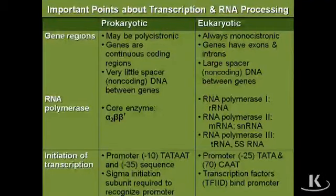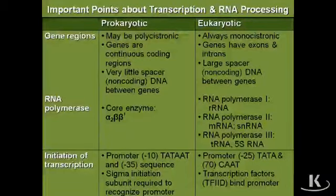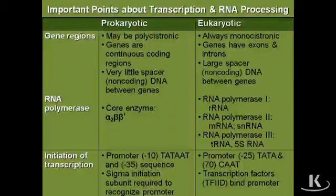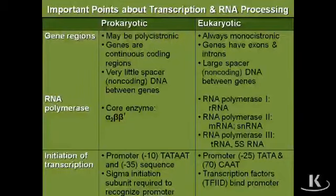In prokaryotic genes, the genes are always continuous coding regions, whereas in eukaryotes, the regions can be divided into exons and the interrupting intron portions. There's very little spacer or non-coding DNA in the prokaryotic genome, whereas for eukaryotes, there's going to be lots of spacer DNA and lots of non-coding DNA regions.